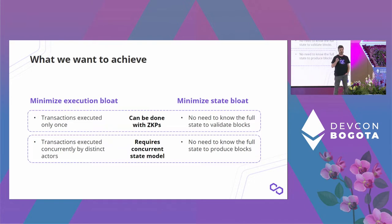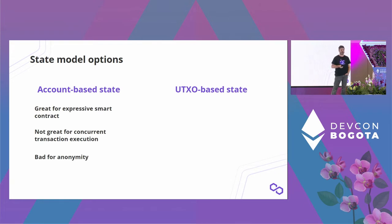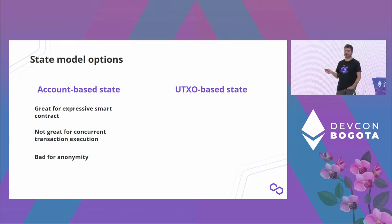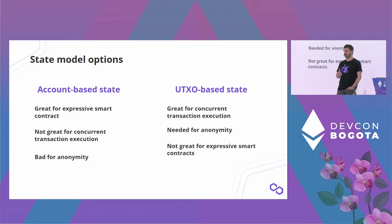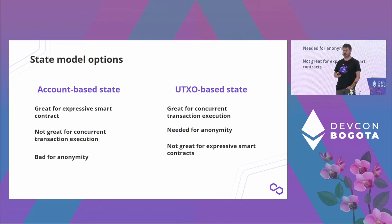Before getting into the concurrent state model, let's look at the popular state models. We usually have account-based state and UTXO-based state. Account-based state is great for expressive smart contracts — this is what we love about Ethereum — but it's not great for concurrent execution and it's bad for anonymity, because knowing which account participates in which transaction makes it hard to hide the transaction graph. UTXO-based model is the opposite: great for concurrent execution since transactions are logically separate, and a very good tool for anonymity. But it's not great for expressive smart contracts.